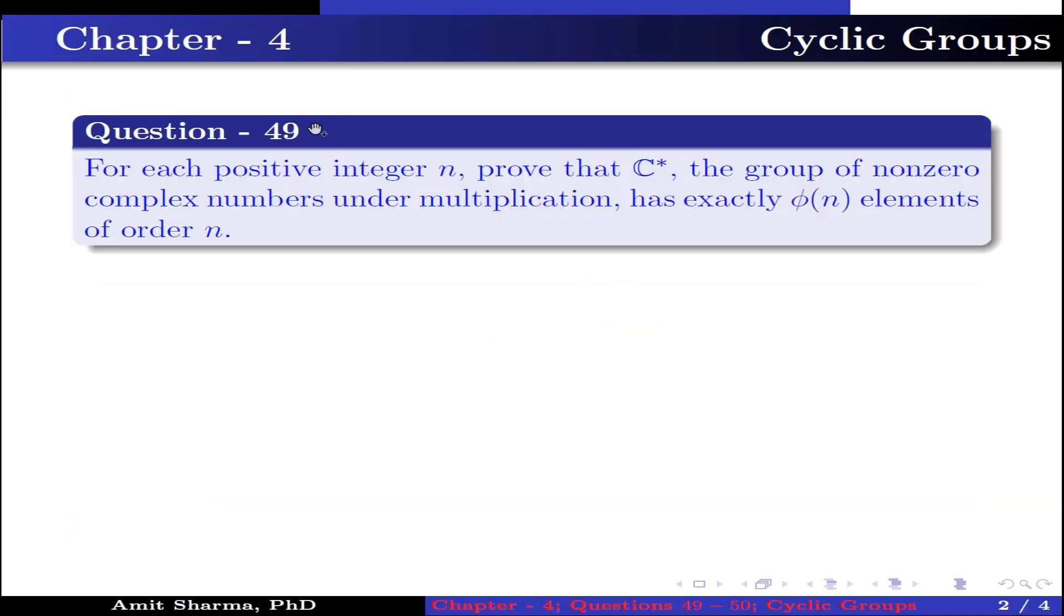Question number 49. For each positive integer n, prove that C*, the group of nonzero complex numbers under multiplication, has exactly φ(n) elements of order n.